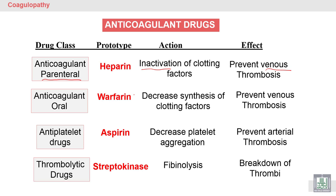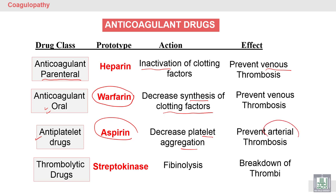We have another anticoagulant called warfarin. Warfarin is completely different from heparin because it is an oral tablet. It decreases the synthesis of clotting factors, especially the vitamin K-dependent factors 2, 7, 9, and 10, to prevent and treat venous thrombosis. Aspirin is an anti-platelet drug that decreases platelet aggregation and is used mainly to prevent arterial thrombosis.